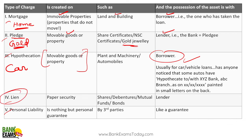Lien — this is a kind of paper security. For example, if you took a loan against a mutual fund or against your insurance policy, the lender has the possession. If you default, the lender has the authority to sell your property.